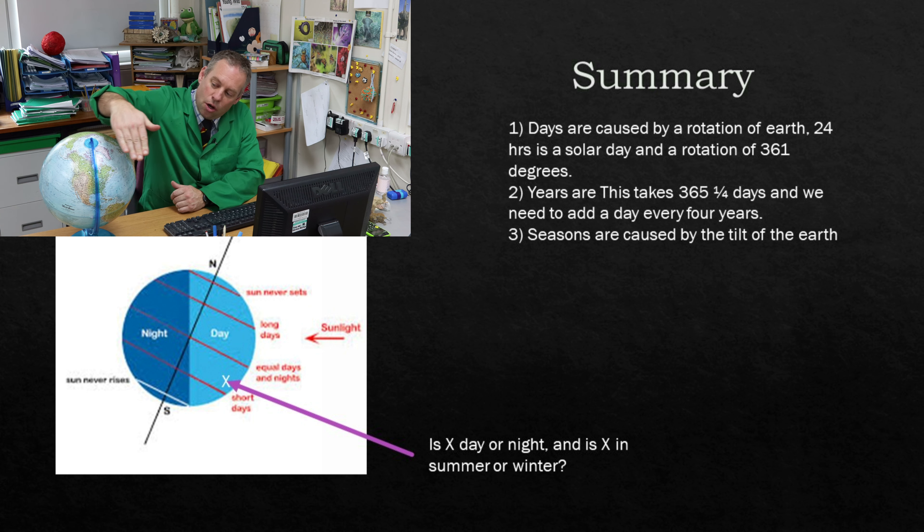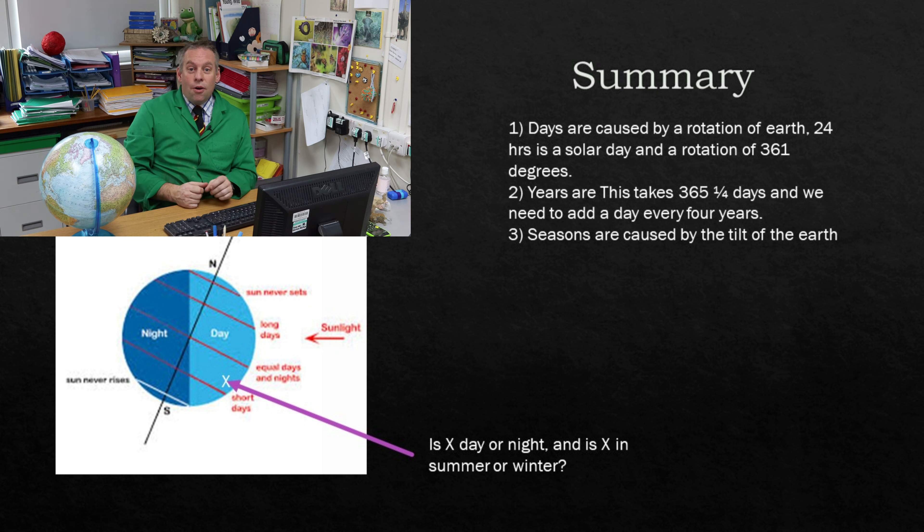And the last thing we covered was about how the tilt of the Earth affects the seasons. And we talked about how the angle of the surface enables the sunlight to be spread out or concentrated and that causes summer and winter and spring and autumn on the Earth.